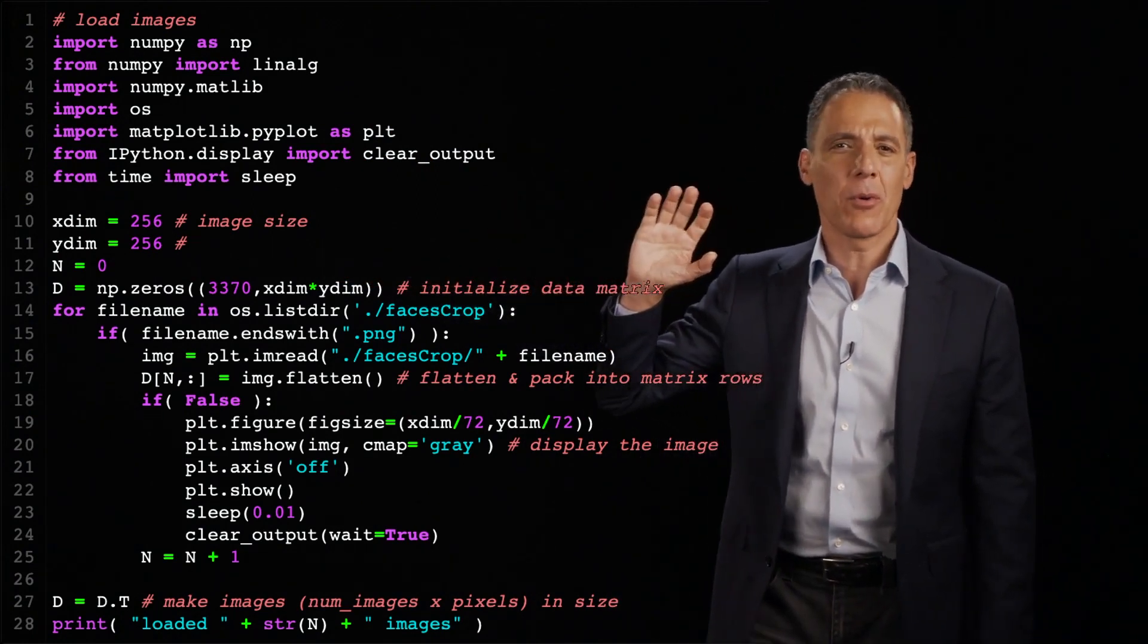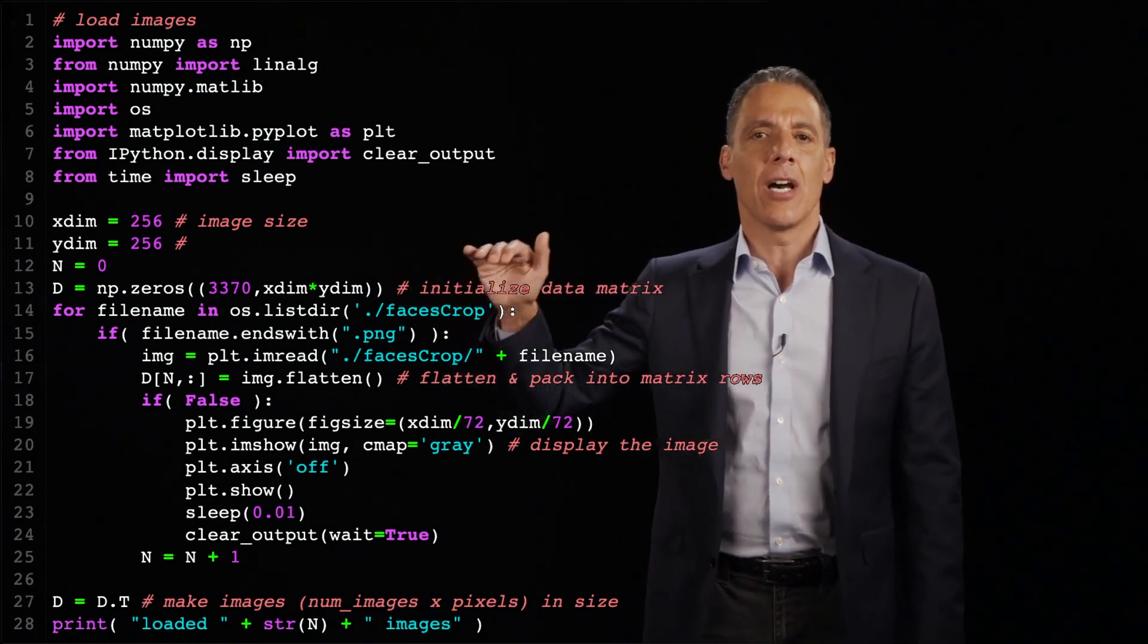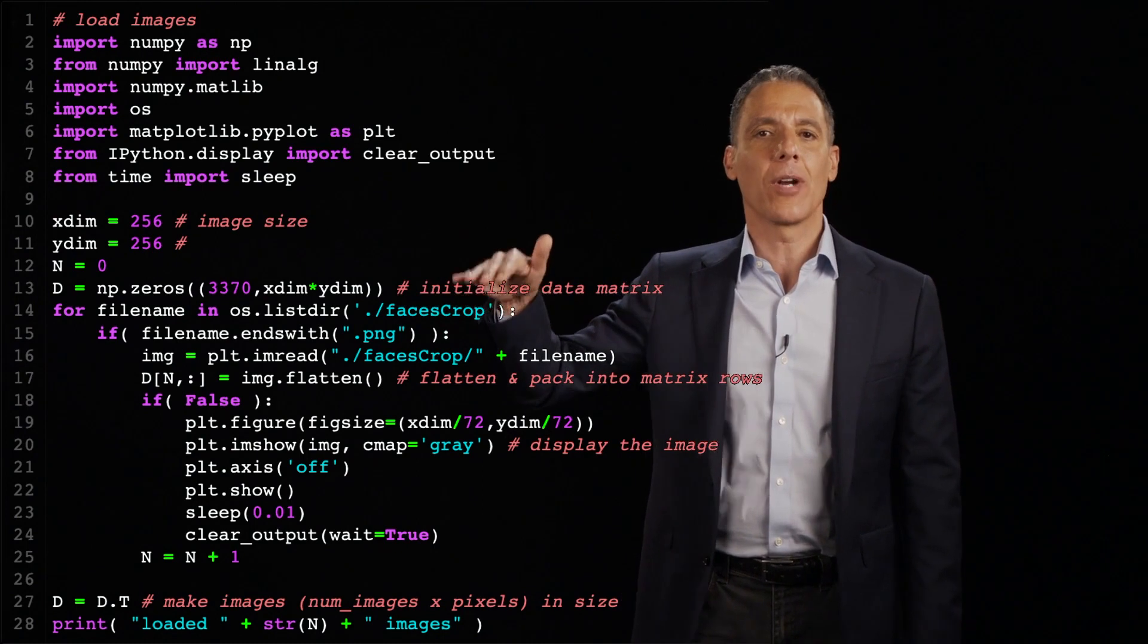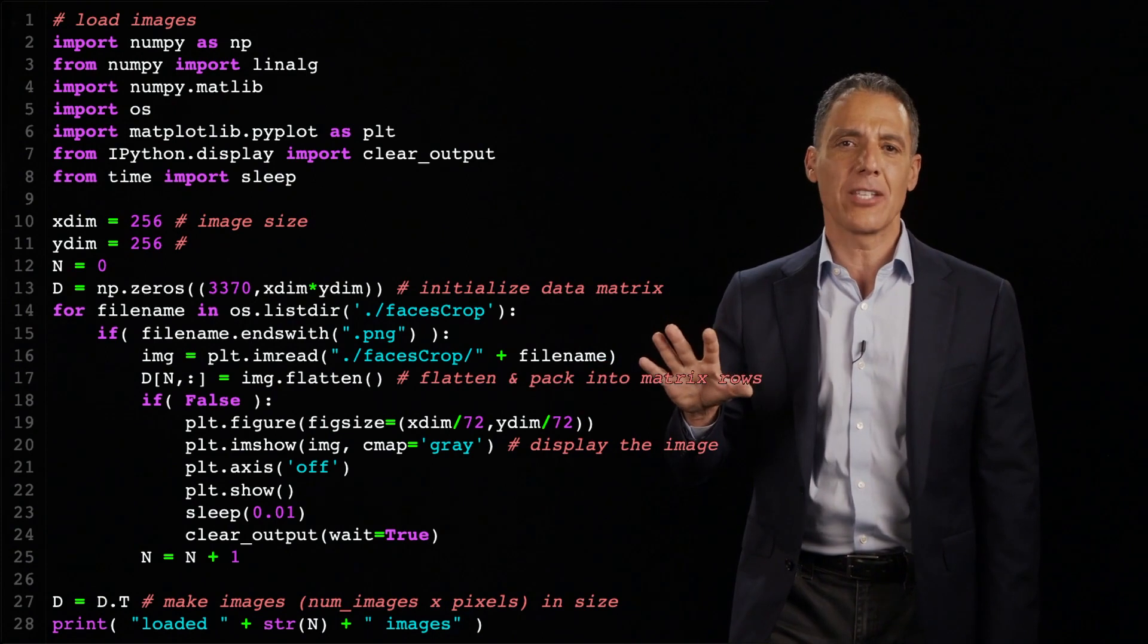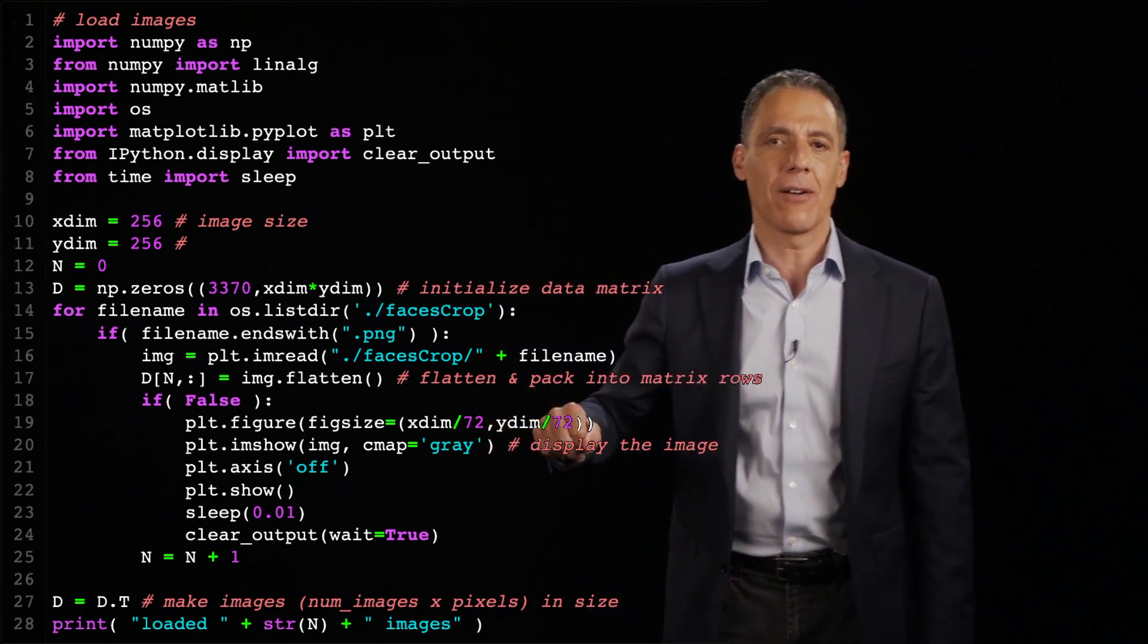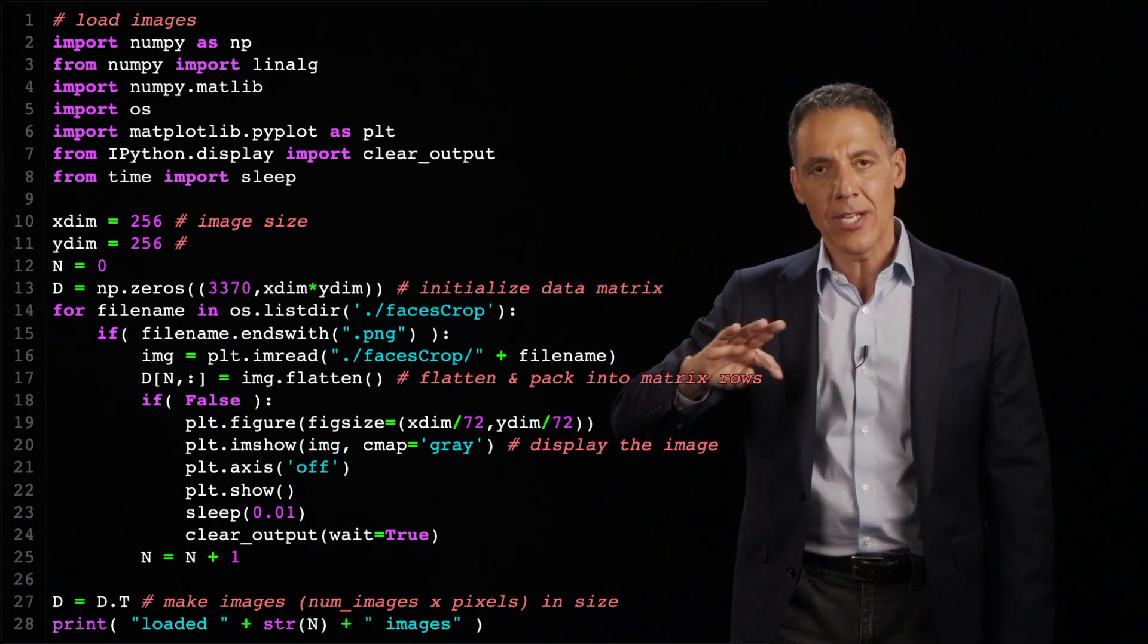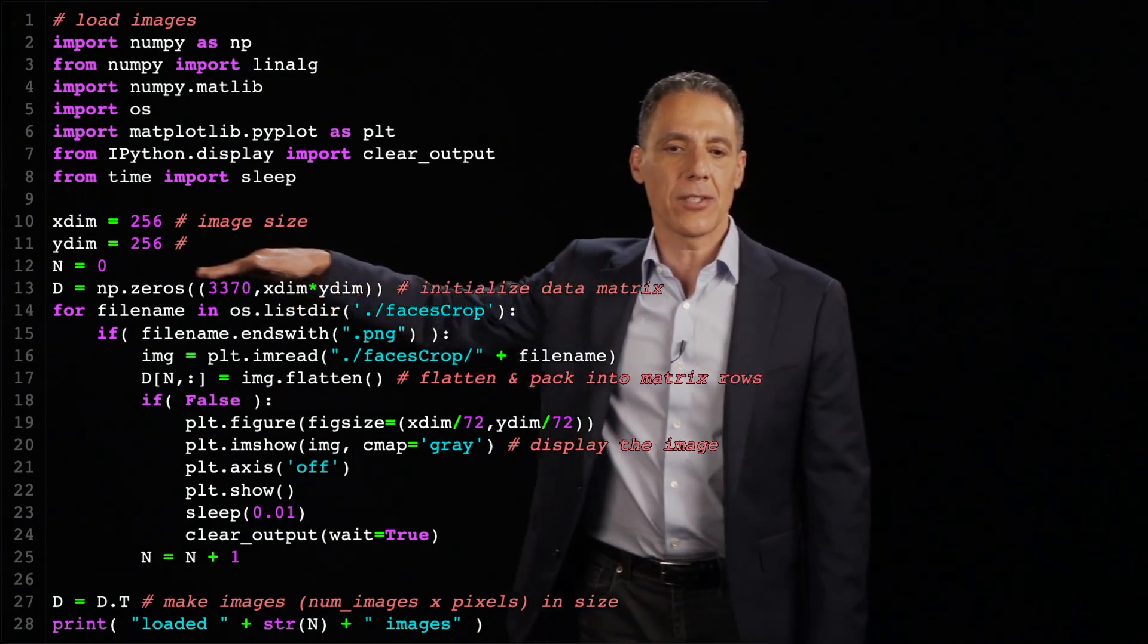And probably what is one of the most classic examples from Turk and Pentland of PCA for both dimensionality reduction and recognition. And although PCA is not used today for modern face recognition, this is still a great example of how you can use PCA for both dimensionality reduction and then also for doing a little bit of pattern recognition.